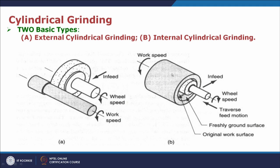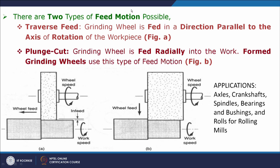The work piece is also rotated and the wheel is rotated to perform internal cylindrical grinding. There are two types of motions based on the length of the work piece and the width of the grinding wheel. When the length of the work piece to be processed is bigger than the width of the grinding wheel, traverse feed is needed, given parallel to the axis of rotation of the work piece. In the other case where the width of the wheel is bigger than the length of the work piece, plunge cut is used — the grinding wheel is simply fed radially into the work piece to achieve the required cut and desired size and shape. This type of cylindrical grinding is used for finishing products like axles, crankshafts, spindles, bearings, bushings, and rolls for roller mills.